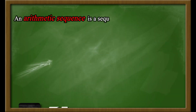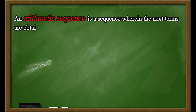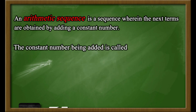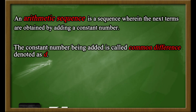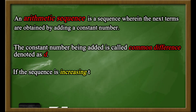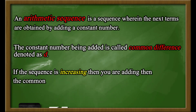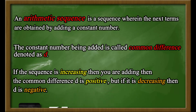An arithmetic sequence is a sequence wherein the next terms are obtained by adding a constant number. The constant number being added is called the common difference, denoted as D. If the sequence is increasing, then the common difference is positive. But if it is decreasing, then the common difference D is negative.